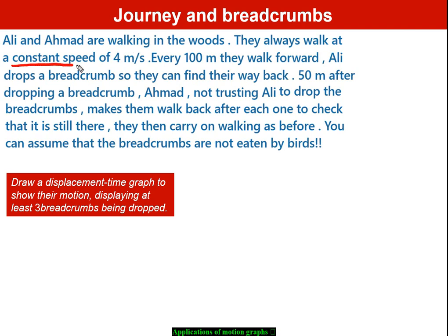First, let's understand what is given in the question. The speed is constant — this is very important. Every 100 meters they walk forward, they drop a piece of bread, then continue 50 meters forward and then move backward. That is the main summary of the question.